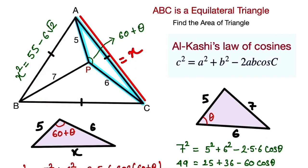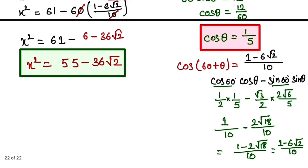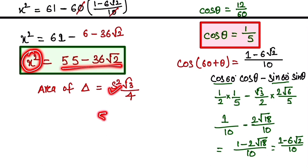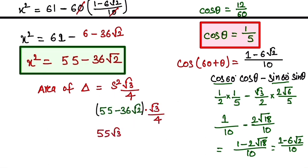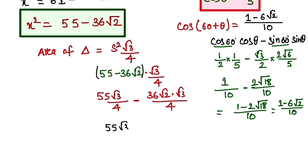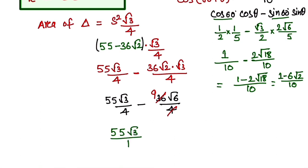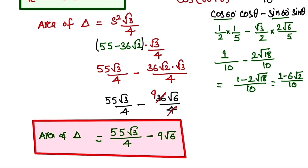Now we know that the area of an equilateral triangle is (√3/4)·side². We already found the side squared is (55 − 36√2). So the area = (55 − 36√2)·(√3/4) = 55√3/4 − 36√6/4, which simplifies to 55√3/4 − 9√6. This is our final answer. Thank you so much for watching. If you like the video, please subscribe to our channel and share it with your friends.